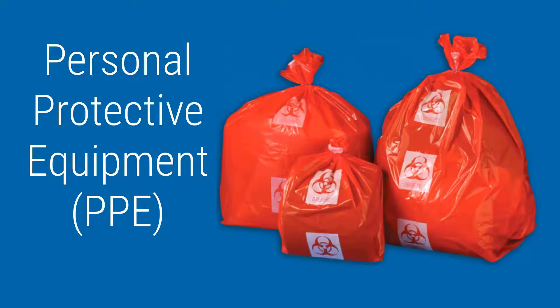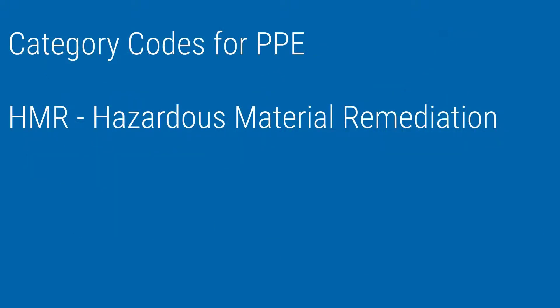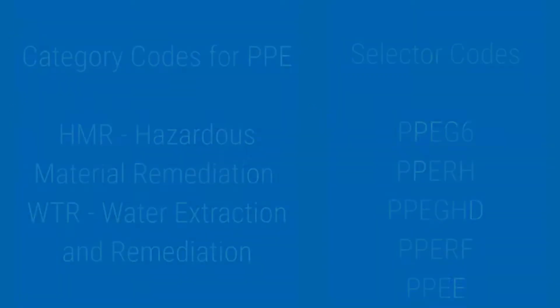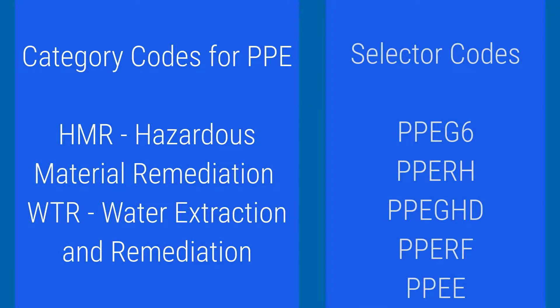Two category codes used to find PPE are HMR, for hazardous material remediation, and WTR, for water extraction and remediation. If you follow these codes with a selector code PPE, you will find most everything you need to keep yourself safe from hazardous materials as you scope the property or deal with the cleanup.